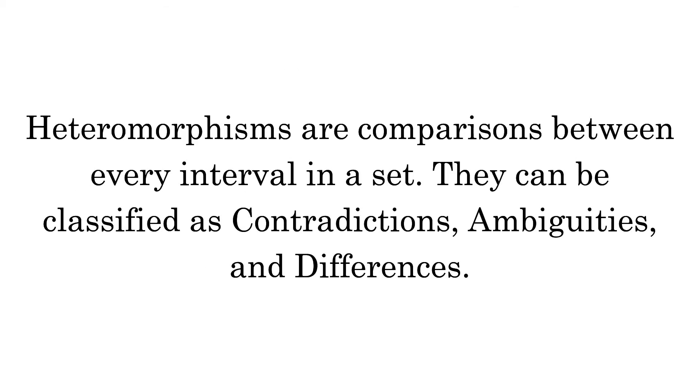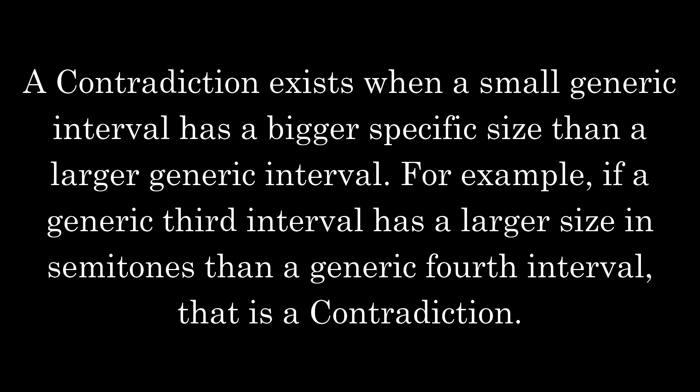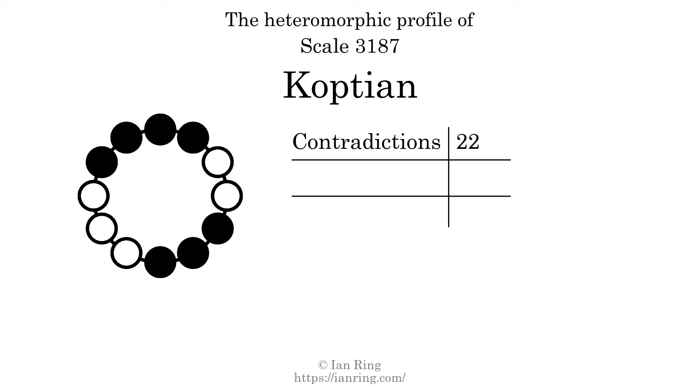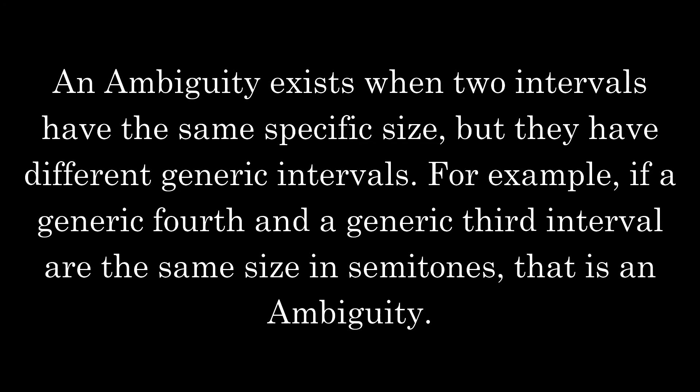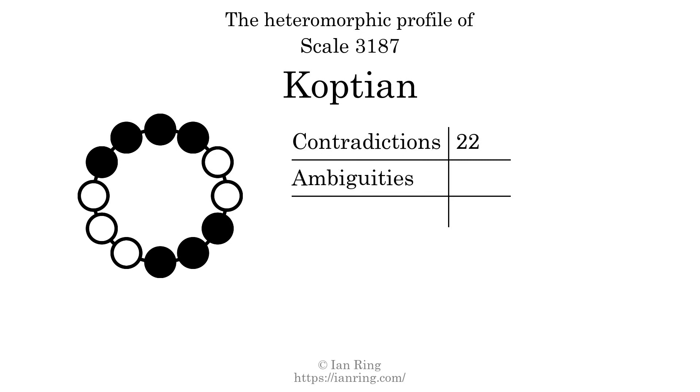Heteromorphisms are comparisons between every interval in a set. They can be classified as contradictions, ambiguities, and differences. A contradiction exists when a small generic interval has a bigger specific size than a larger generic interval — for example, if a generic third interval has a larger size in semitones than a generic fourth interval. The number of contradictions in this scale is 22. An ambiguity exists when two intervals have the same specific size but different generic intervals. The number of ambiguities in this scale is 27.